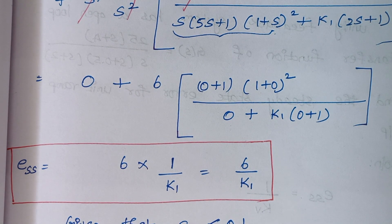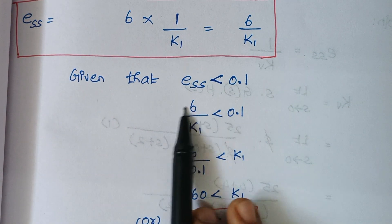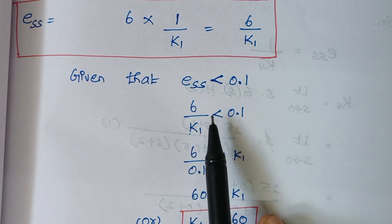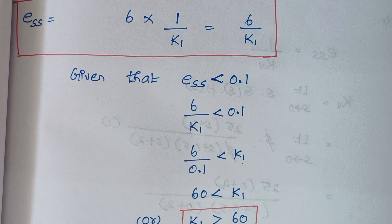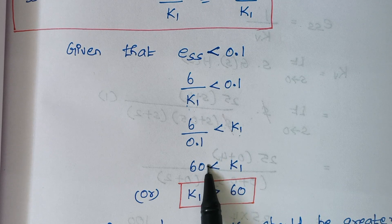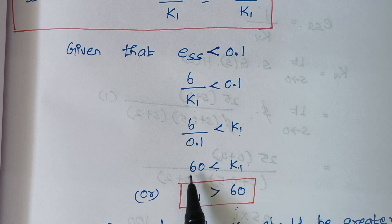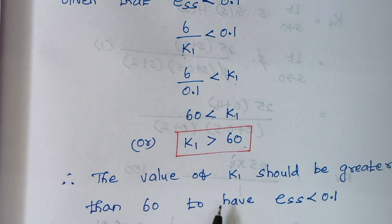They asked us to find k1 given the steady state error is less than 0.1, and we found the steady state error is 6/k1. Substituting: 6/k1 < 0.1. Rearranging by interchanging terms: 6/0.1 < k1, which gives 60 < k1. So k1 must always be greater than 60. Whenever k1 is greater than 60, the steady state error will be less than 0.1. Thank you.